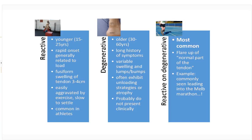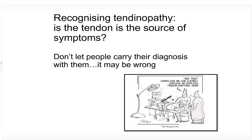The most common thing you'll see is reactive-on-degenerative — a flare-up of the normal part of the tendon. Leading into a big event with a large increase in load, people with a little underlying pathology overload the normal part of the tendon and become symptomatic. A true degenerative tendinopathy only presents as symptomatic when they overload and flare up the reactive part — that's as best we know what causes symptoms.